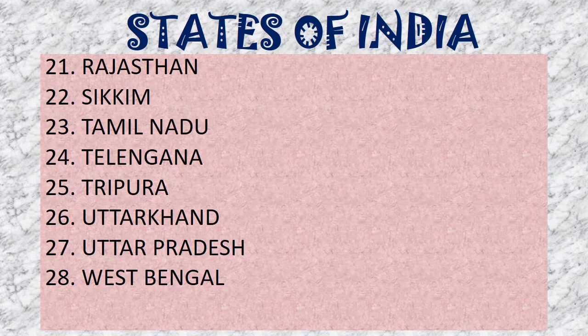Let me read all the 28 states of India: Andhra Pradesh, Arunachal Pradesh, Assam, Bihar, Chhattisgarh, Goa, Gujarat, Haryana, Himachal Pradesh, Jharkhand, Karnataka, Kerala, Madhya Pradesh, Maharashtra, Manipur, Meghalaya, Mizoram, Nagaland, Odisha, Punjab, Rajasthan, Sikkim, Tamil Nadu, Telangana, Tripura, Uttarakhand, Uttar Pradesh, West Bengal.